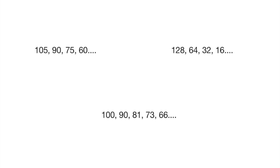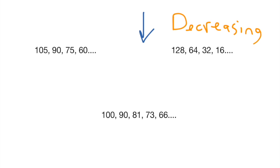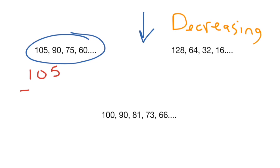The opposite of an increasing pattern would be a decreasing pattern, or sometimes we call it a shrinking pattern, which means your numbers are going to go down. The first example here is a decreasing pattern where it seems like we're going down by a fixed amount each time — our numbers aren't getting really, really small really, really fast. So we can take 105 and subtract 90 and ask: what is happening to 105 to make a 90? If you do that, you will get 15.